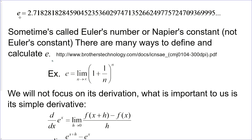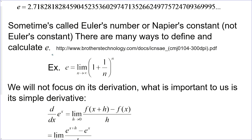It turns out that the number is e, approximately 2.71. It's an irrational constant, just like pi. This is sometimes called Euler's number or Napier's constant. There are many ways to define and calculate e — for example, you can calculate it using a certain limit. But we're not going to focus on the derivation of e or how to calculate it.